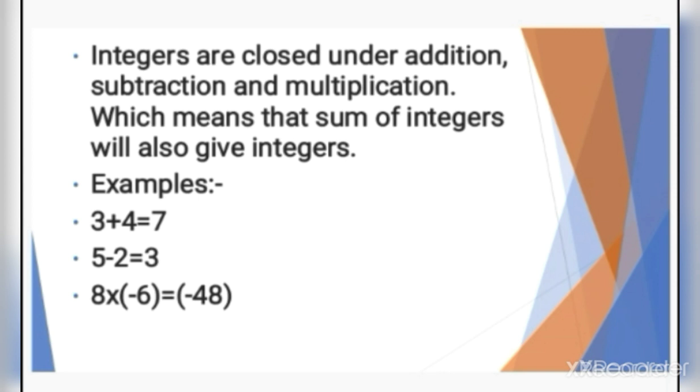5 minus 2 is 3. Here, 5 and 2 are integers, and 3 is also an integer.